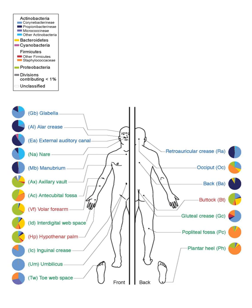Microbiota have been found to be crucial for immunologic, hormonal and metabolic homeostasis of their host. The synonymous term microbiome describes either the collective genomes of the microorganisms that reside in an environmental niche or the microorganisms themselves. The microbiome and host emerge during evolution as a synergistic unit from epigenetics and genetic characteristics, sometimes collectively referred to as a holobiont.